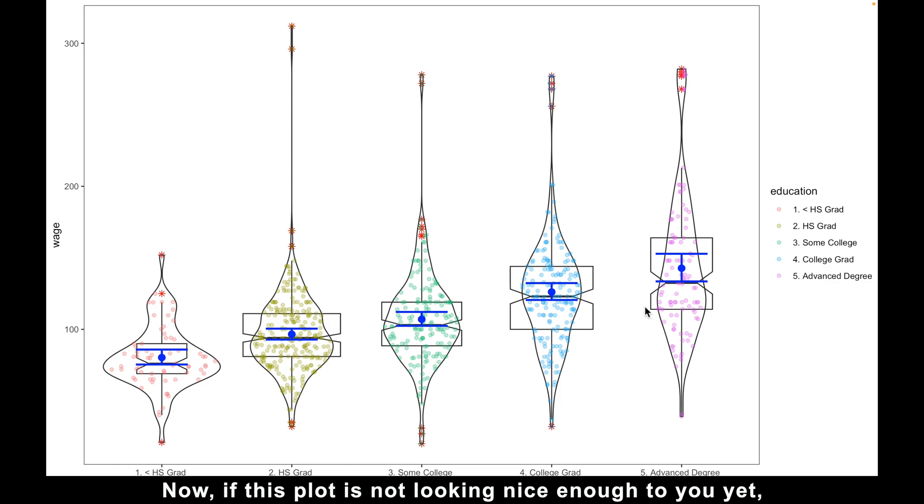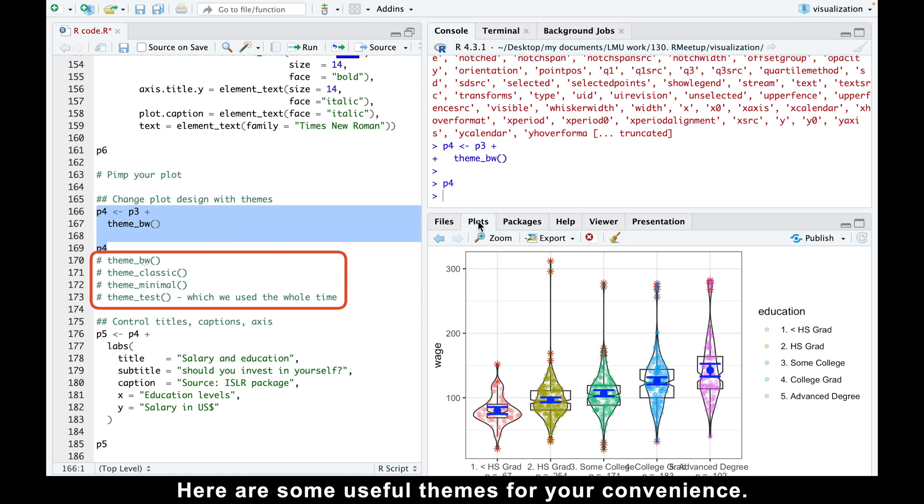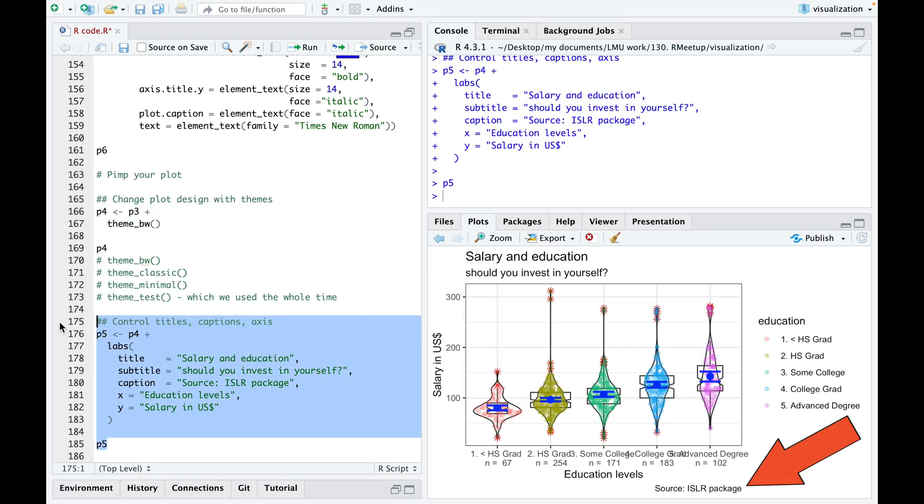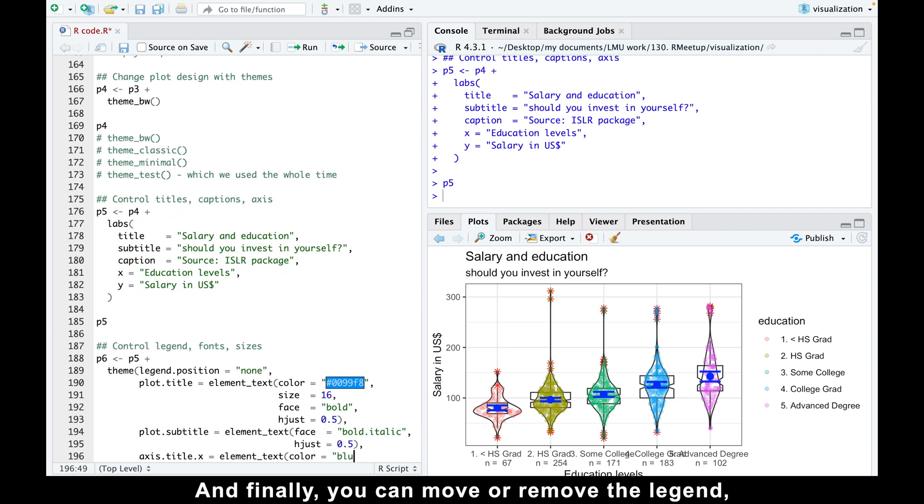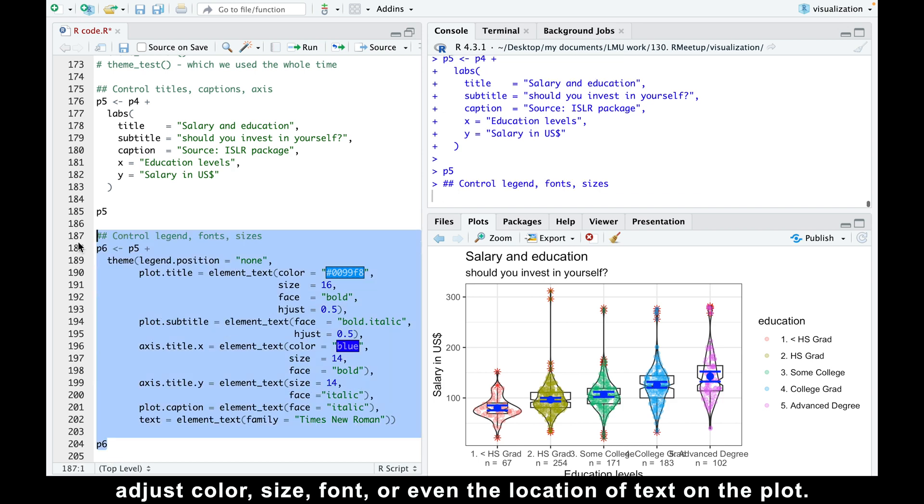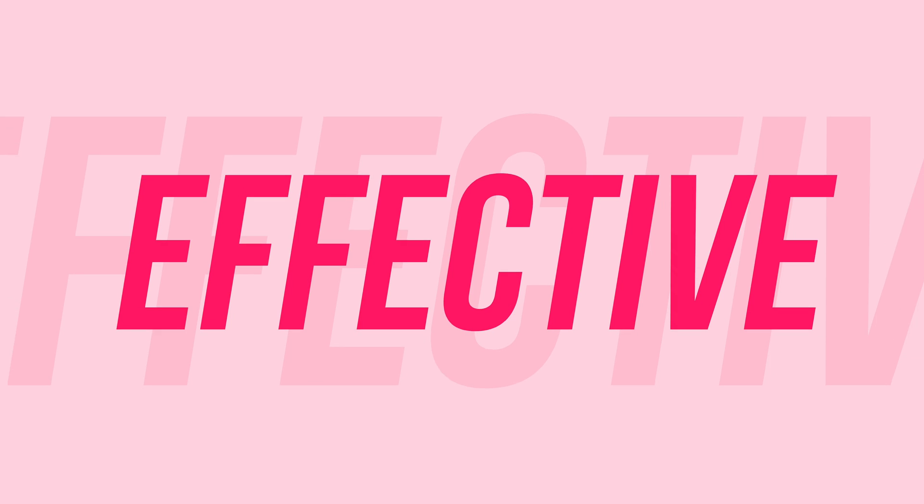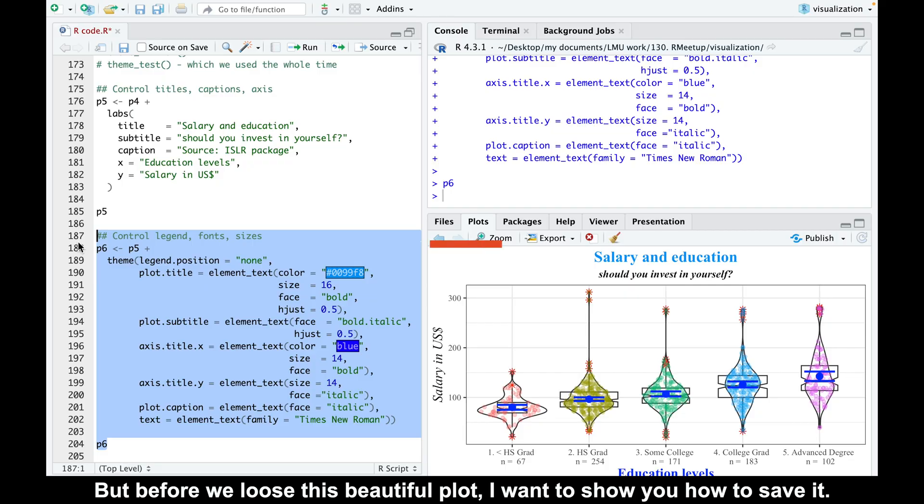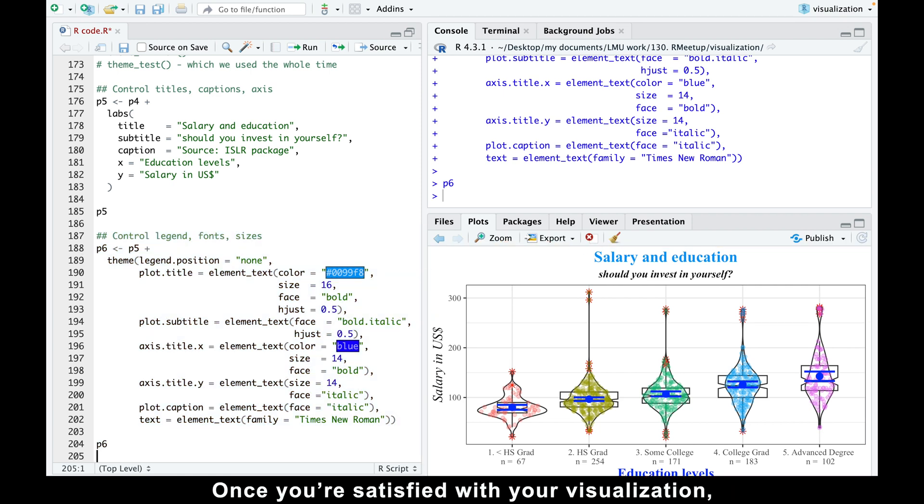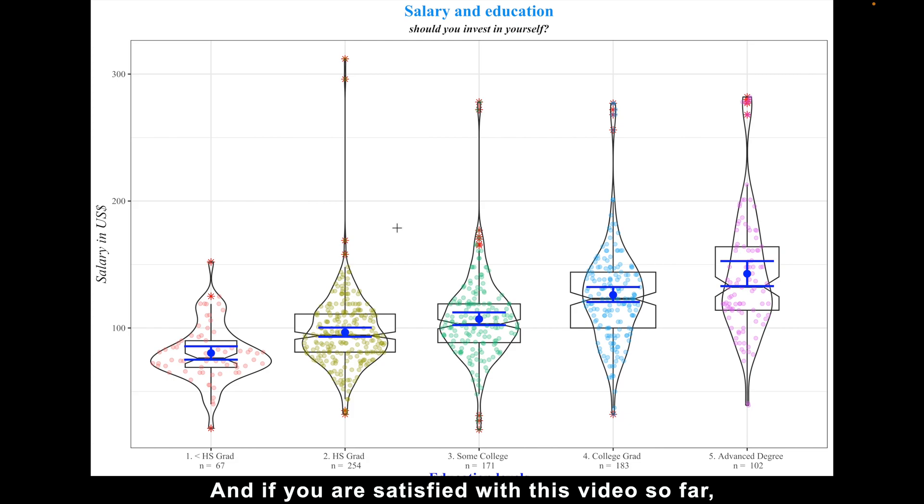Now, if this plot is not looking nice enough to you yet, you can quickly improve its appearance by choosing a new plot design with a single command. Here are some useful themes for your convenience. Then you can specify titles, captions, and axis names within the labs command. And finally, you can move or remove the legend, adjust color, size, font, or even the location of text on your plot. For instance, we can choose the Times New Roman font on our plot to match the text font in our publication. It's just effective. But we are just scratching the surface, because the next thing you learn will absolutely blow your mind. But before we lose this beautiful plot, I want to show you how to save it. Once you are satisfied with your visualization, you can save it using the ggsave command in your preferred format, quality, and size. And if you are satisfied with this video so far, consider hitting the like button.